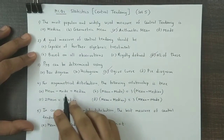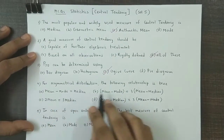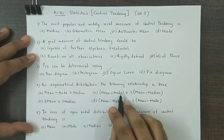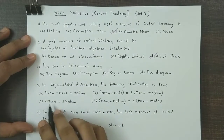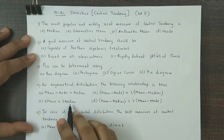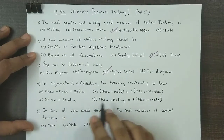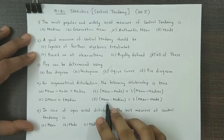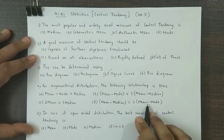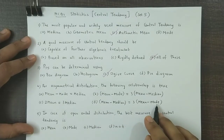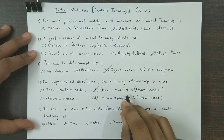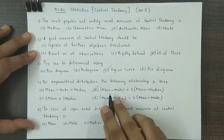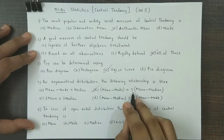Question 4 concerns the empirical relationship. Mean minus mode equals three times mean minus median. The answer is option B. This is known as the empirical relationship: mean minus mode equals three times mean minus median.